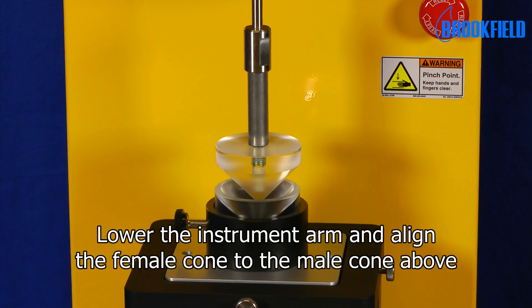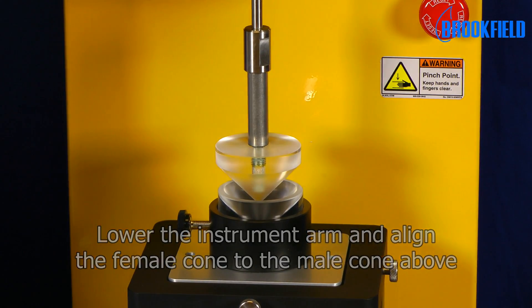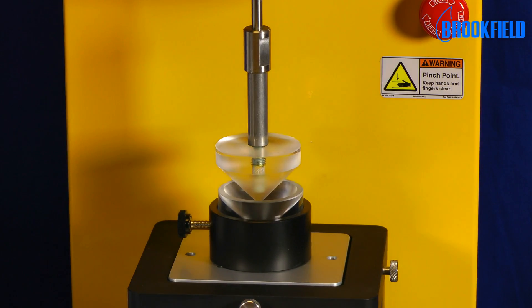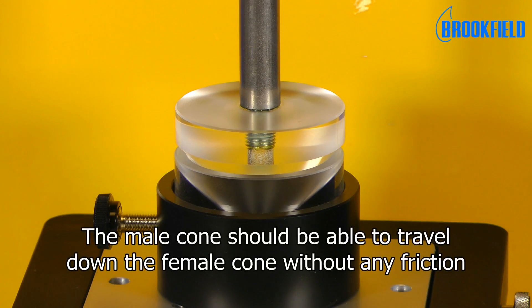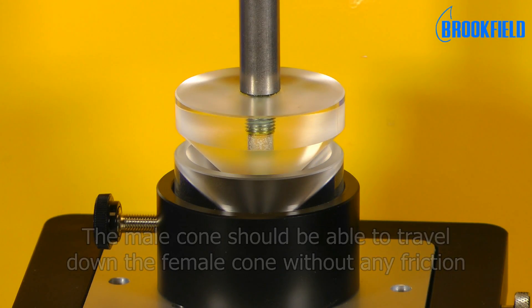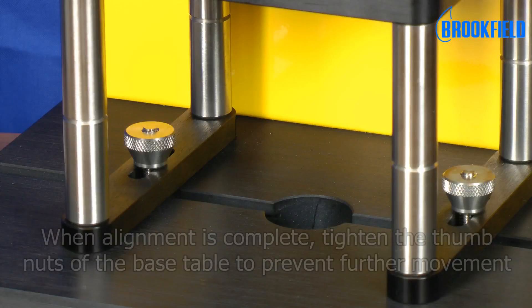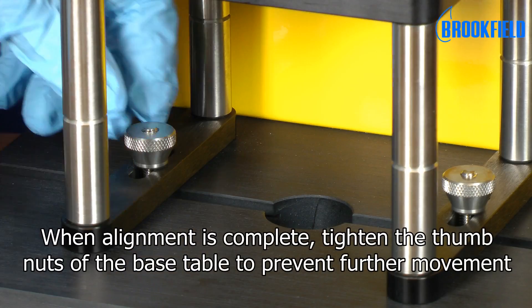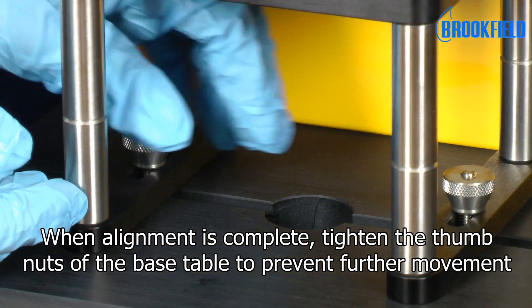Lower the instrument arm and align the female cone to the male cone above. The male cone should be able to travel down the female cone without any friction. When alignment is complete, tighten the thumb nuts of the base table to prevent further movement.